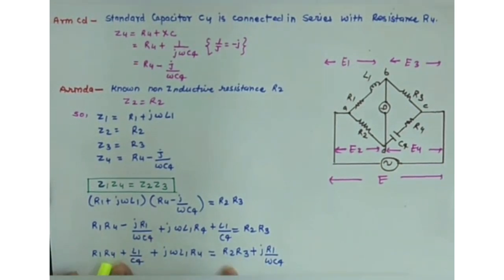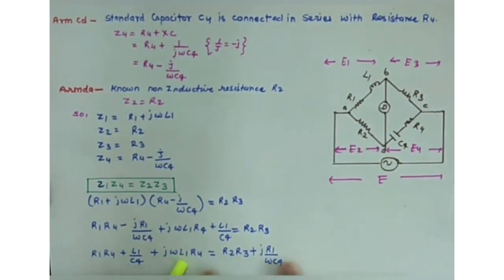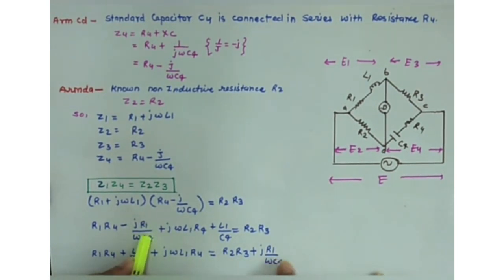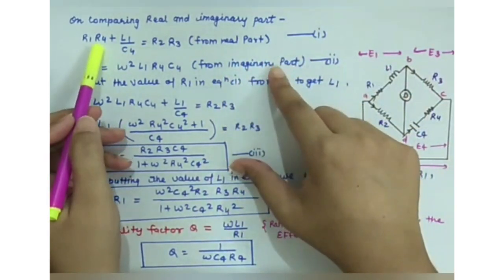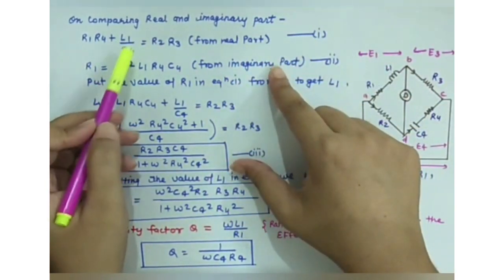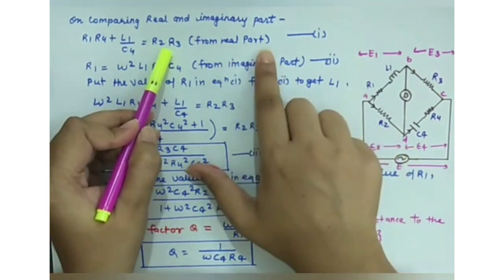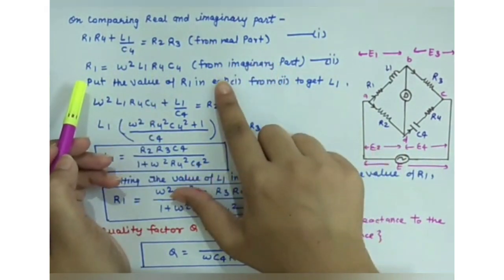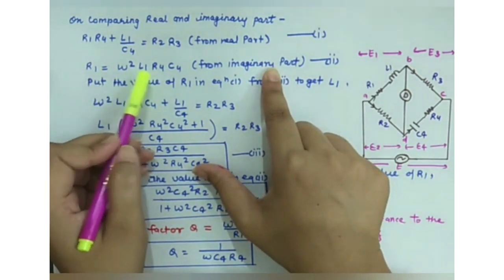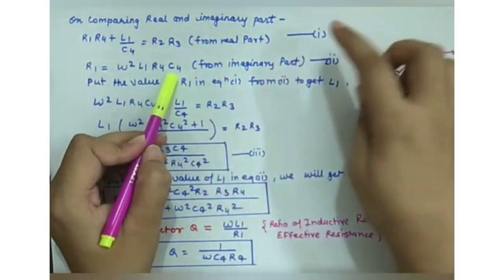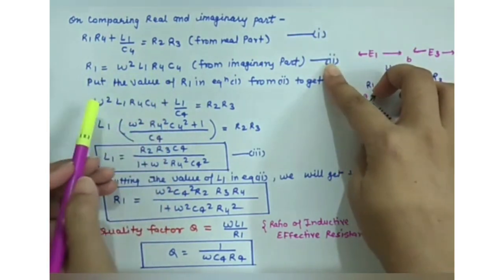Rearranging: (R1·R4 + L1/C4) + j(ωL1·R4 − R1/(ωC4)) = R2·R3. Comparing real and imaginary parts gives two equations. Equation 1 (real part): R1·R4 + L1/C4 = R2·R3. Equation 2 (imaginary part): R1 = ω²L1·R4·C4.